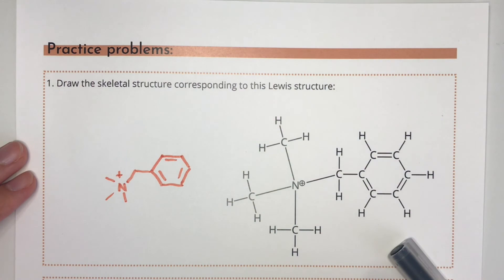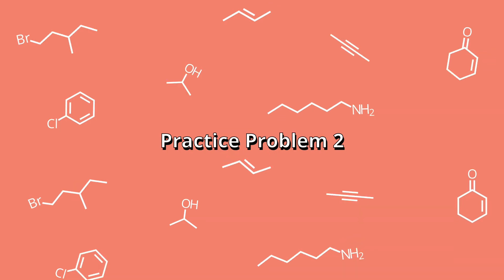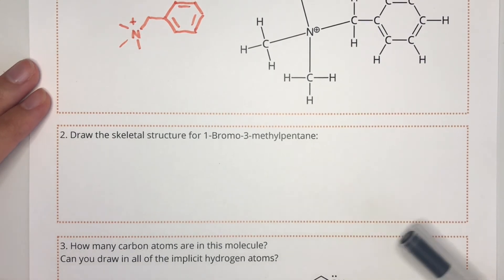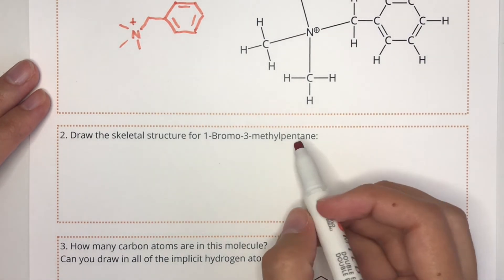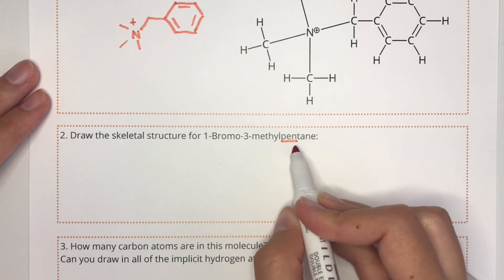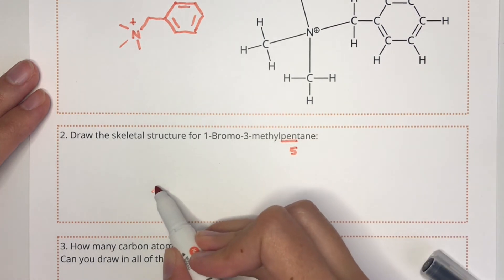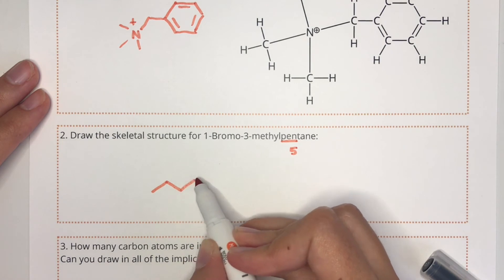And lastly, just this positive charge on the nitrogen atom. If you don't know what that positive charge means, stay tuned for my next video where I'm going to discuss formal charges on organic molecules. Problem number two: draw the skeletal structure for 1-bromo-3-methylpentane. We're going from a name to a drawing. The pentane part of this name means that there are five carbons in the chain, so we're going to draw those out in the zigzag pattern.